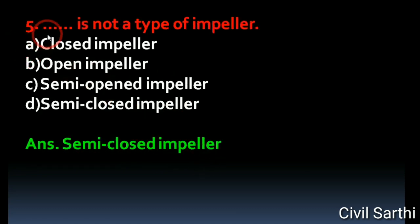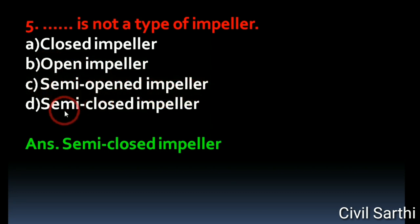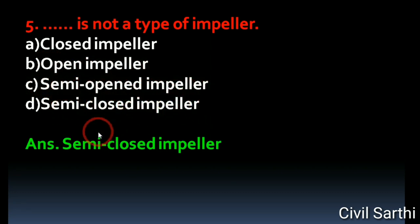Question No.5: Dash is not a type of impeller. Option A: Closed Impeller. Option B: Open Impeller. Option C: Semi Open Impeller. Option D: Semi Closed Impeller. The right answer is Semi Closed Impeller.